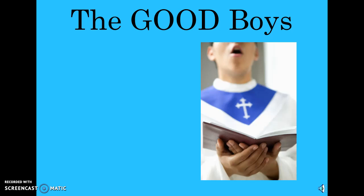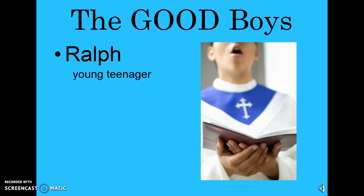Let's classify these into very simple terms — we'll call them just good boys and bad boys. The first person that arrives on the island is Ralph, and Ralph is definitely your protagonist. He's a young teenager, one of the oldest boys on the island — about 12 or 13 years old. He believes in law and order, and throughout his entire time on the island he's going to try to keep everyone together and to keep things civil and democratic. He believes that no person is greater than the other.